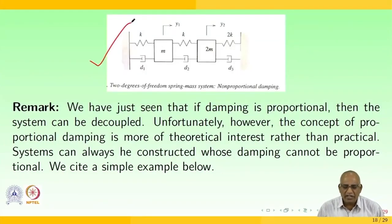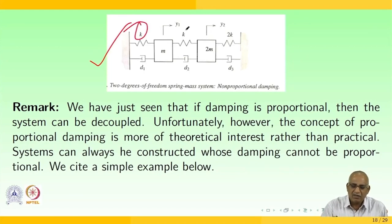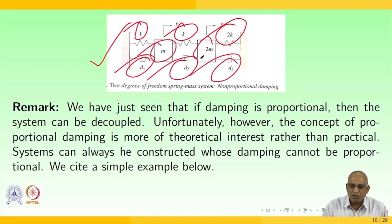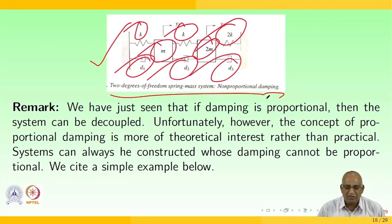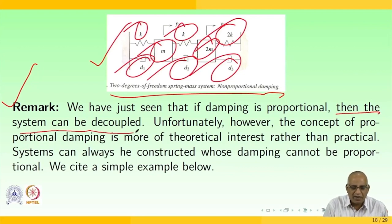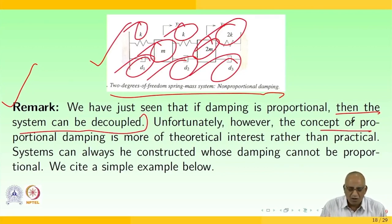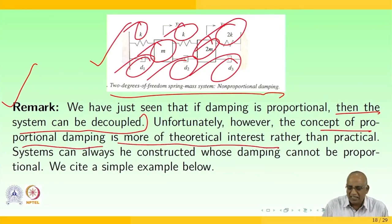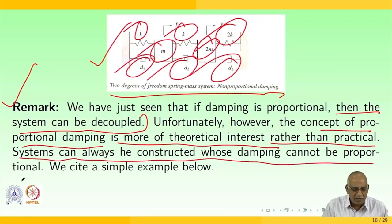Consider a 2-degrees-of-freedom spring-mass system with non-proportional damping, with spring constants k, k, and 2k, damping coefficients d1, d2, d3, and masses m and 2m. We have just seen that if damping is proportional, then the system can be decoupled. Unfortunately, the concept of proportional damping is more of theoretical interest rather than practical. Systems can always be constructed whose damping cannot be proportional.